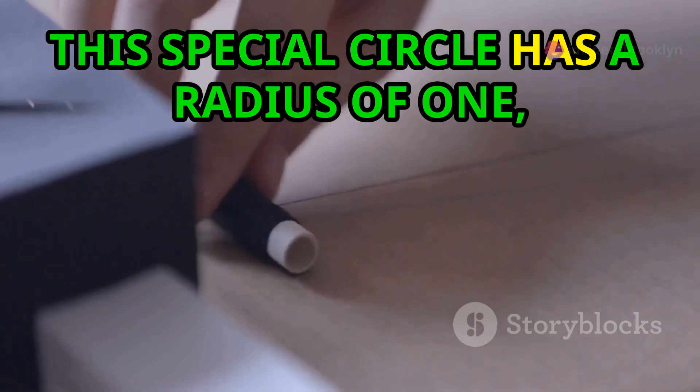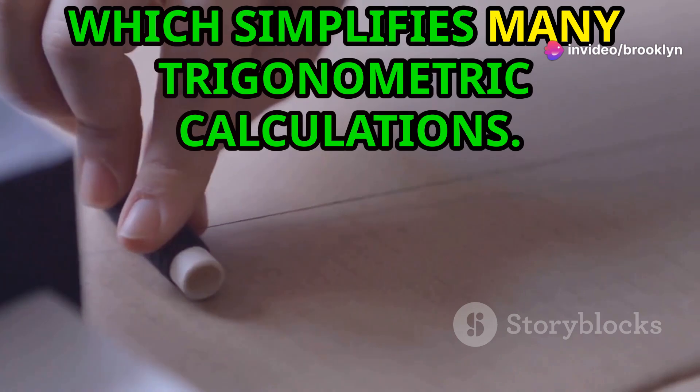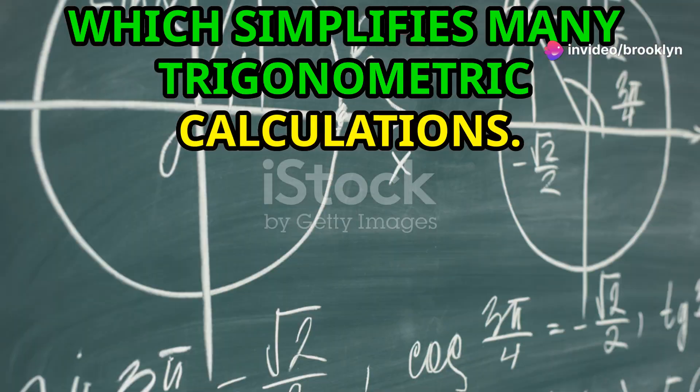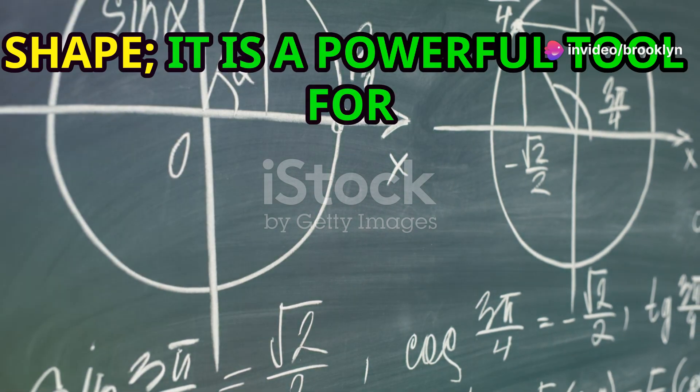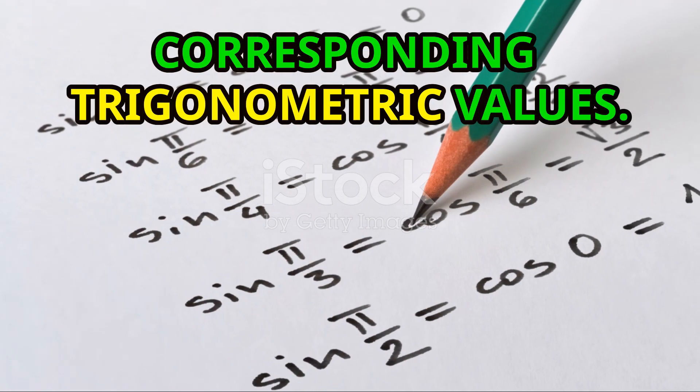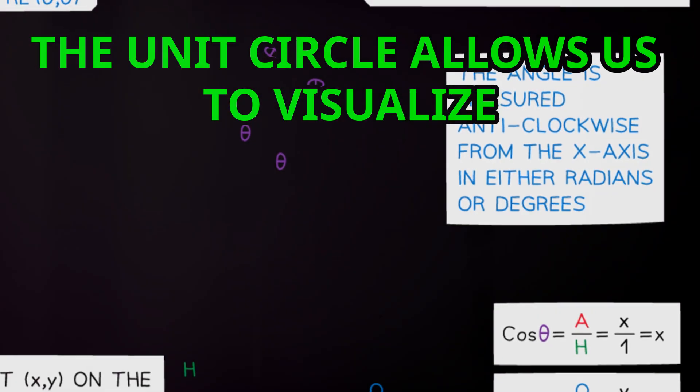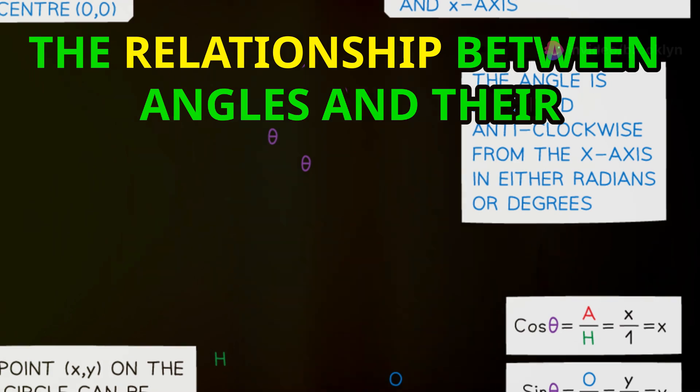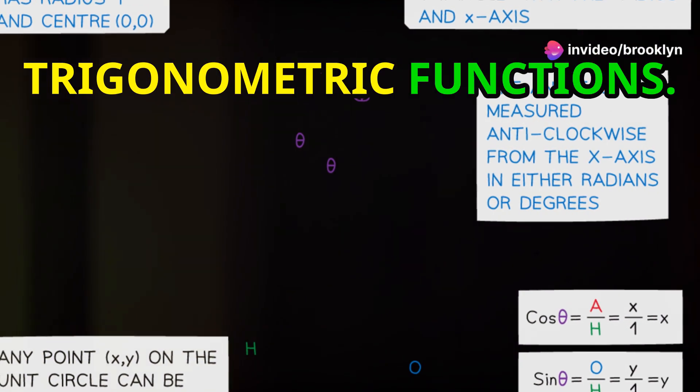This special circle has a radius of 1 which simplifies many trigonometric calculations. The unit circle is more than just a shape, it is a powerful tool for understanding angles and their corresponding trigonometric values.